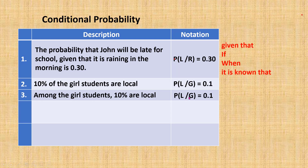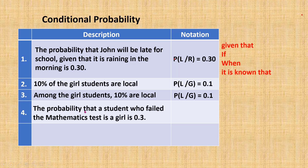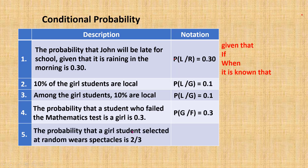Another example: the probability that a student who failed the mathematics test is a girl is 0.3. Here, we already know the students failed the mathematics test, so from those who failed, the probability that the student is a girl is 0.3. This is the conditional probability P(G|F). Another example: the probability that a girl student selected at random wears spectacles is 2/3. Since we already know the student is a girl, this is conditional probability P(S|G).